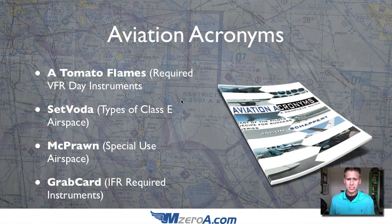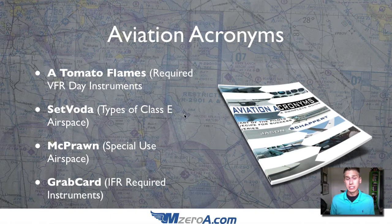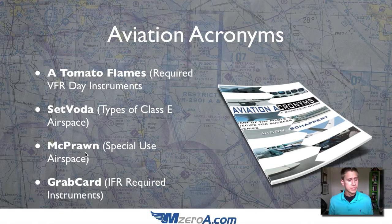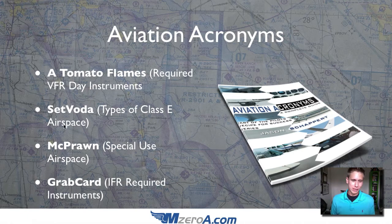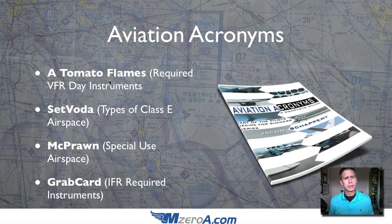It's really inexpensive — I think it's only about ten dollars in the e-book format. If you want to know ATOMATOFLAMES for your required VFR day instruments, SETVOTA which covers different types of classed airspace — I've seen that one alone come up on the past two check rides my students have done — and MCPRAWNS, which sounds like something you'd get at a McDonald's in New Orleans, which covers special use airspace. You can flip it into your flight bag or have the e-book on your iPhone or iPad, ready to go.